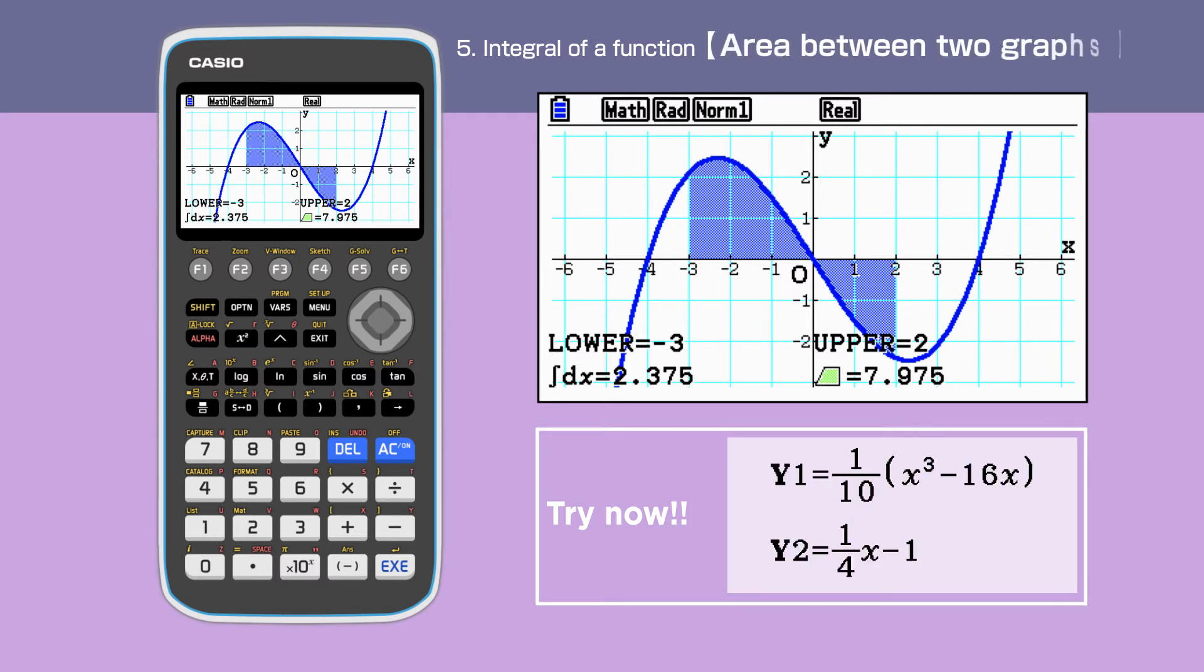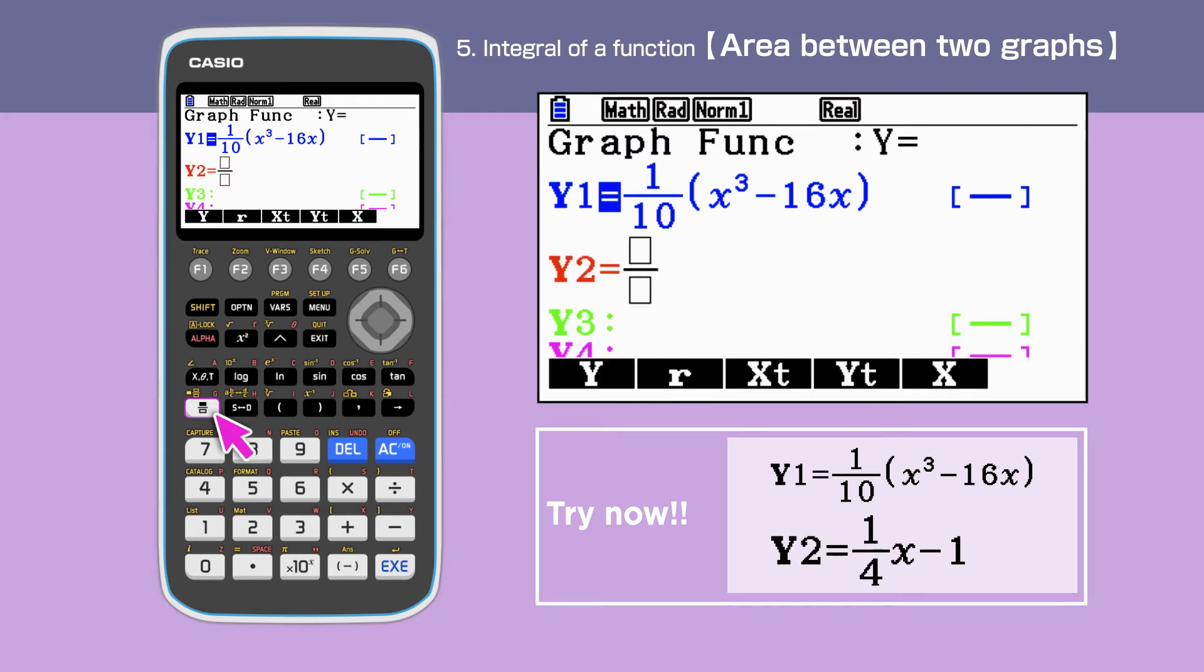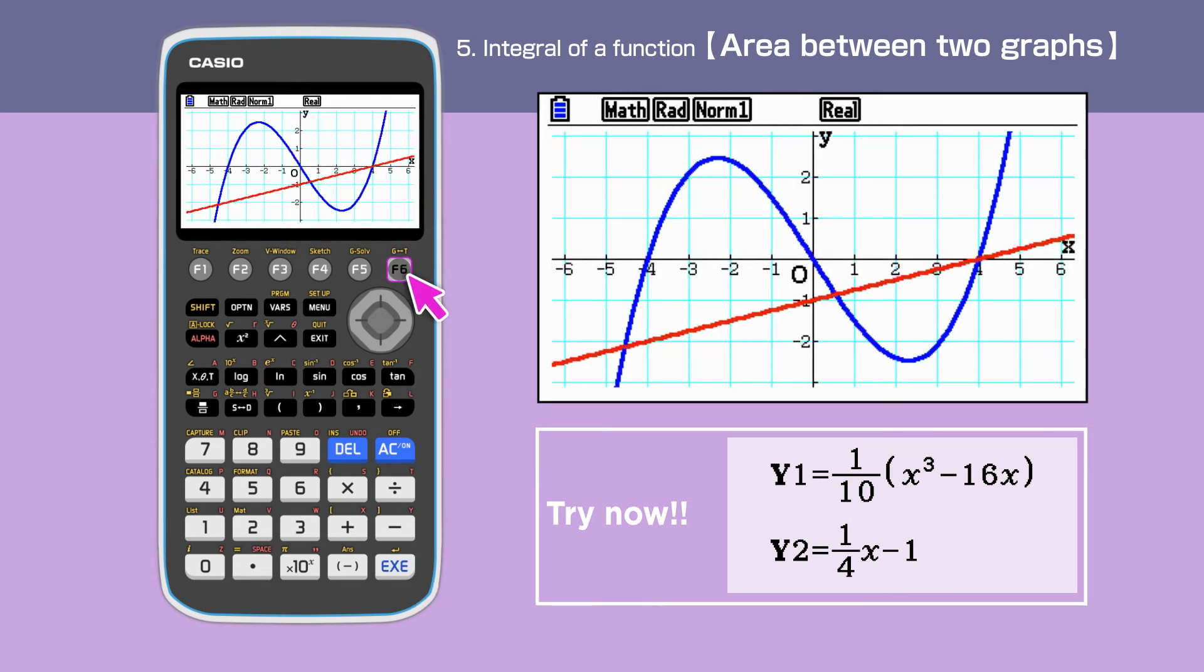Next, we will find the area between two functions. Press Exit and go back to the graph function menu. Enter 1 over 4 x minus 1 in y2 and press F6 to draw the graph.